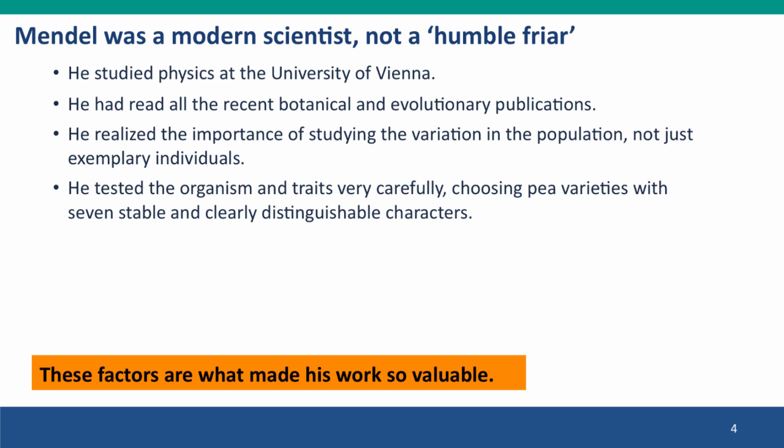He tested his study system very carefully. He didn't just say, oh, we're growing peas, that's nice, I'll study peas. He spent years purchasing as many different varieties of peas as he could, and testing them very carefully for phenotypic properties that were stable, that were consistently shown by the variety, and that were clearly distinguishable from the appearances of other kinds of peas. Peas were an excellent choice because they were agriculturally a very important crop, and there were lots of well-bred varieties that he could study.